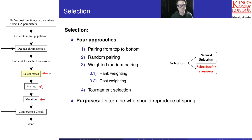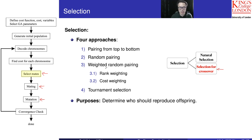When we look at this selection for crossover, we have four approaches. Actually if you look at the literature we have more than these four. The first one is pairing from top to bottom, then random pairing, the third one is weighted random pairing — we call this the roulette wheel weighting as well — and then rank weighting, cost weighting, and tournament selection. The purpose is to determine who is going to reproduce offspring, that is who will act as the parent.